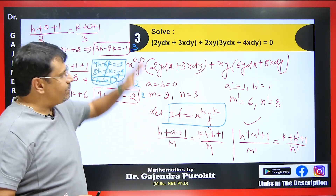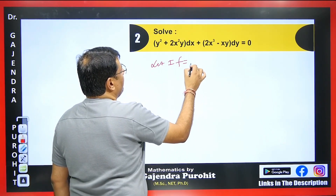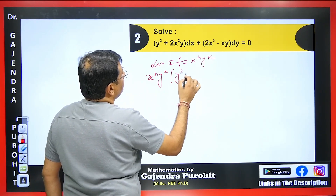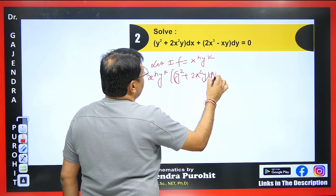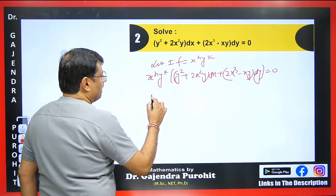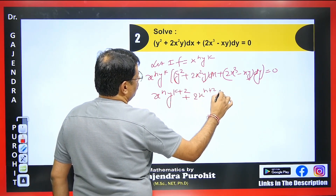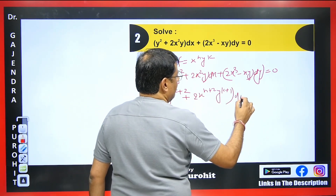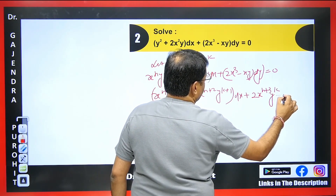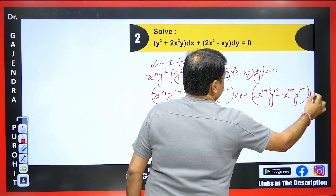Now I will explain another method that can also be applied here. Let the integrating factor be x^h · y^k. Multiplying through the equation x^h · y^k into (y² + 2x²y) dx + (2x³ − xy) dy = 0, we get x^h · y^(k+2) + 2x^(h+2) · y^(k+1) in the M dx part, and x^(h+3) · y^k − x^(h+1) · y^(k+1) in the N dy part, all equal to zero.